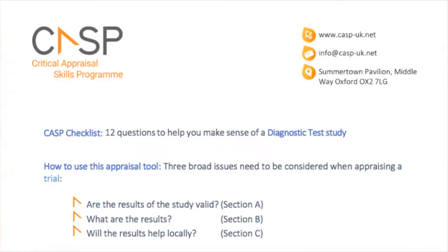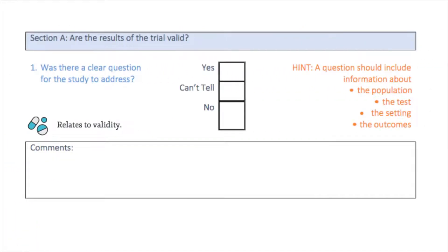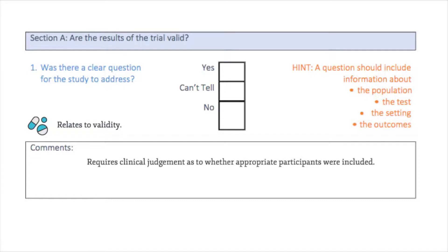So let's take a look at the study by Hollis et al. and perform a critical appraisal using the CASP checklist on diagnostic studies. The first item on the checklist asks us whether there was a clear question for the study to address — is there enough information about the population, is it a reasonable spectrum of patients being included, is there enough information on the test, the setting, and the outcomes being investigated? This requires clinical judgement, and you will want to make sure that no inappropriate participants were included. This question asks us to consider very similar concepts as the PICO framework we have seen in previous modules on interventional studies.